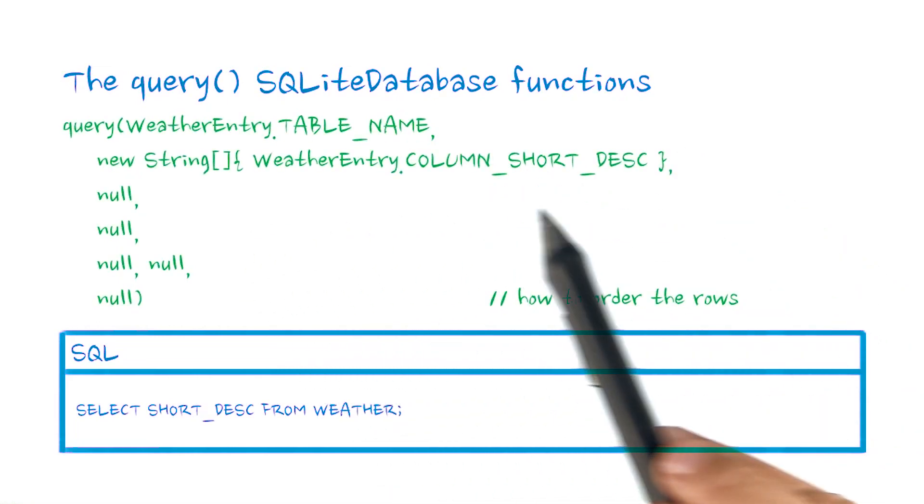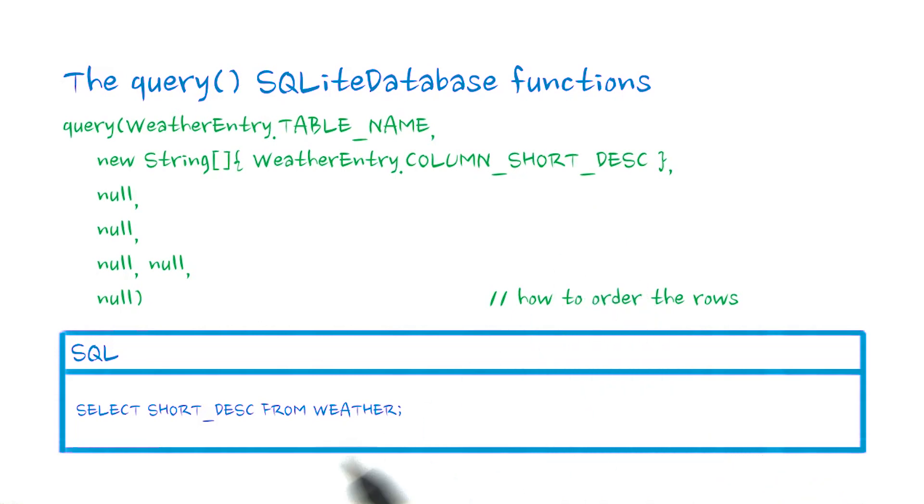Adding a projection, an array of columns we wish to return, changes what we are selecting in the select statement below.